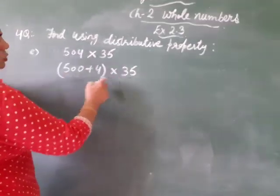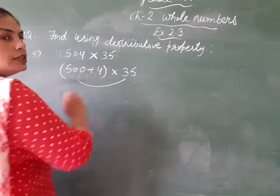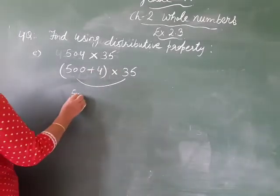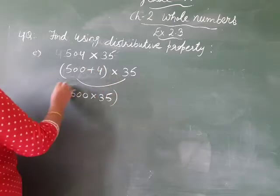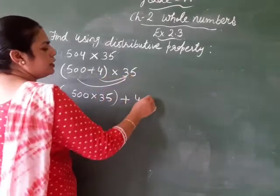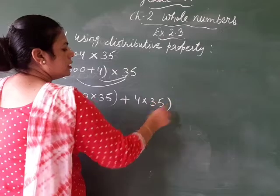So, then 500 into 35, just we solve it. Distributive property, first 500 into 35. Then there is an adding sign, plus 4 into 35. Clear?